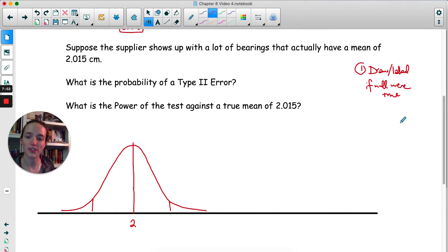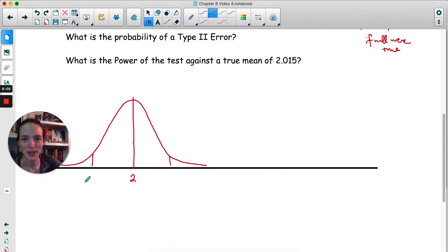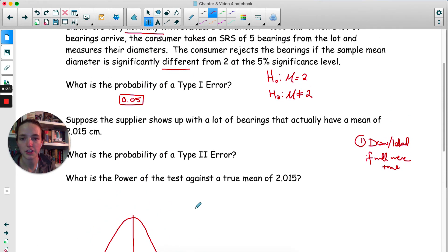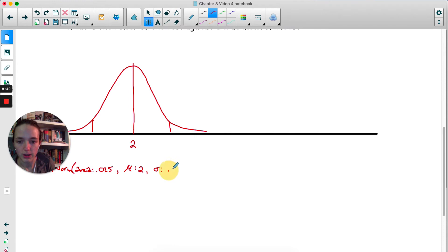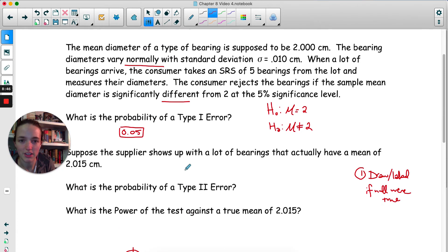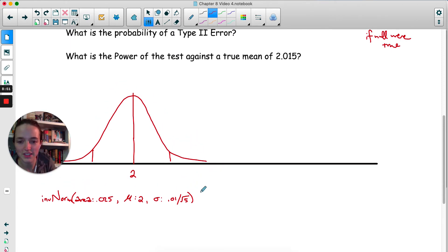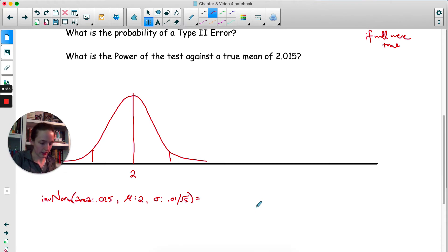I know the area under both of those little tails is 0.025 because my significance level is 0.05. That gets split between the two tails. If I know the area under the curve and I'm trying to find this value, I'm working backwards, that's inverse norm. So area, we know this area under here is 0.025. The mean, now we're doing all this as if the null were true. So for the mean, we're going to put in 2. For standard deviation, we have to find the standard deviation of the sampling distribution. So it's going to be 0.01 over root 5. 1.9912.